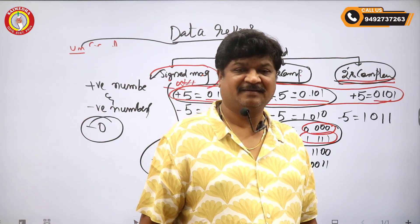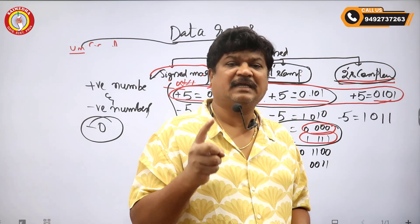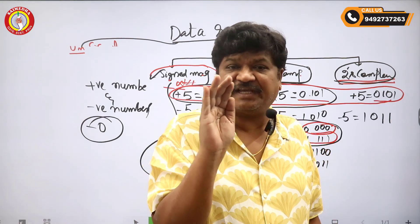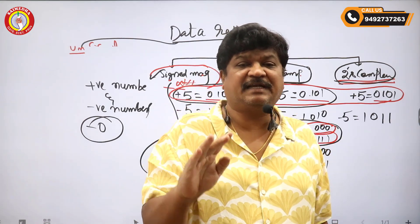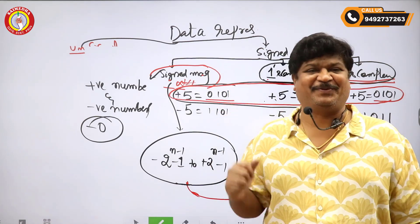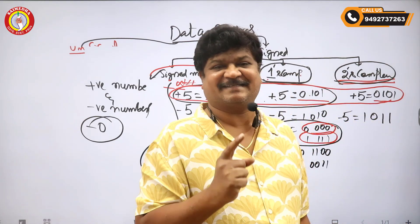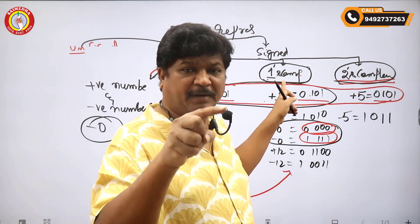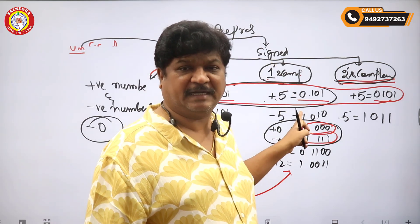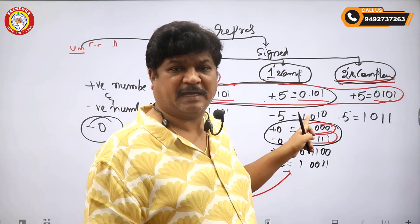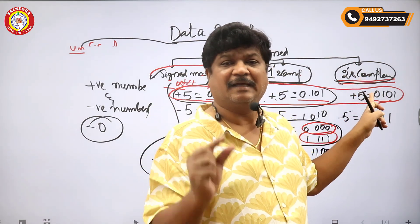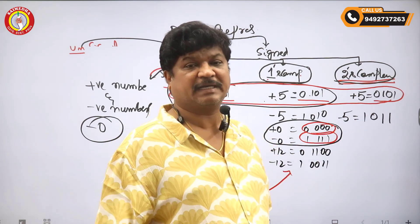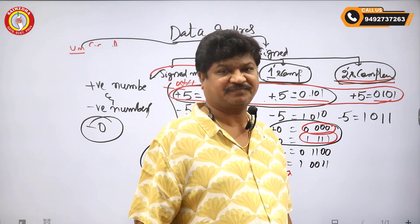In the case of one's complement and two's complement representation, positive numbers do not change — positive numbers are written as in sign magnitude. Whereas to get the negative number: in one's complement, write the positive number and make a one's complement for that. Similarly, in two's complement representation, write the positive number and make the two's complement for that to obtain the negative number.